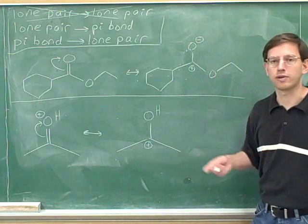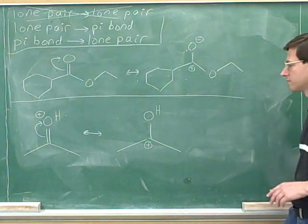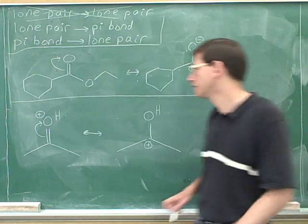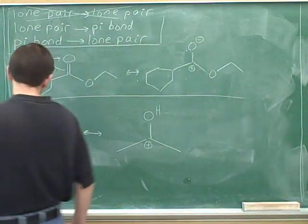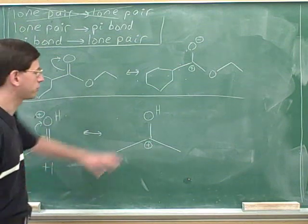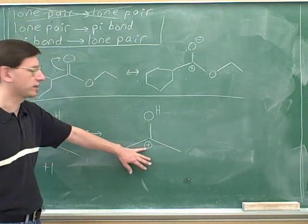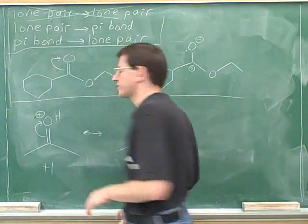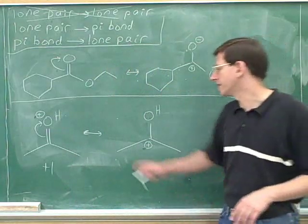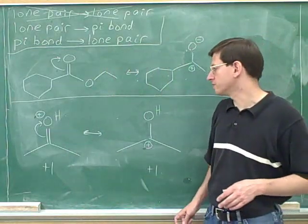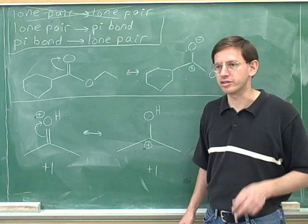So this is the correct resonance structure. Let's check the net charges. In this picture there's one positive charge, so the net charge is positive one. On the right-hand structure there's also one positive charge, so the net charge is positive one. The net charges are the same, which confirms that we're on the right track with our resonance structures.